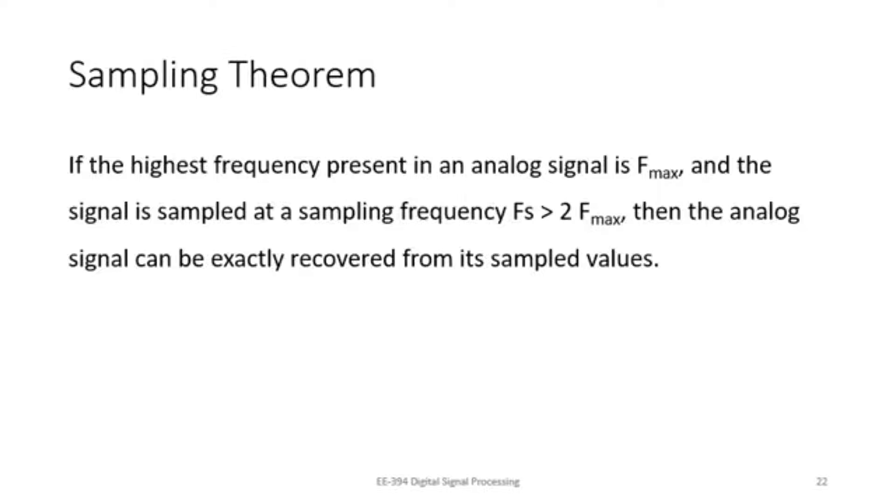The sampling theorem, I'll just read what it says. If the highest frequency present in an analog signal is f max, and the signal is being sampled at a sampling frequency fs greater than twice f max, so that if this condition is followed, then the analog signal can be exactly recovered from its sample values.